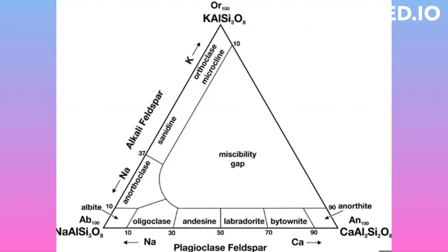The potassium rich phase, orthoclase, is normally dominant, and veins or patches of albite are exsolved from the original homogeneous feldspar. This is known as perthitic texture, which differentiates the alkali feldspars from plagioclase feldspars. This coexistence of two intergrowth phases is commonly visible in hand specimens of slowly cooled alkali feldspars, and such intergrowths are known as perthite.